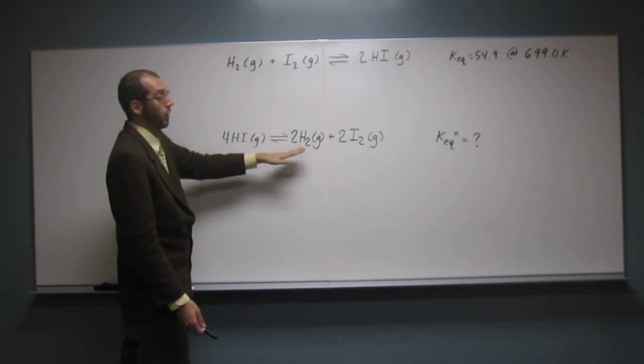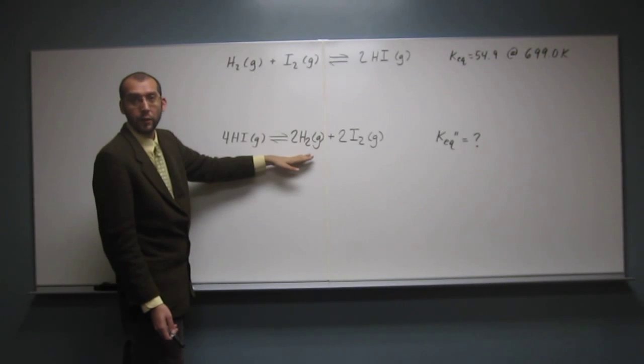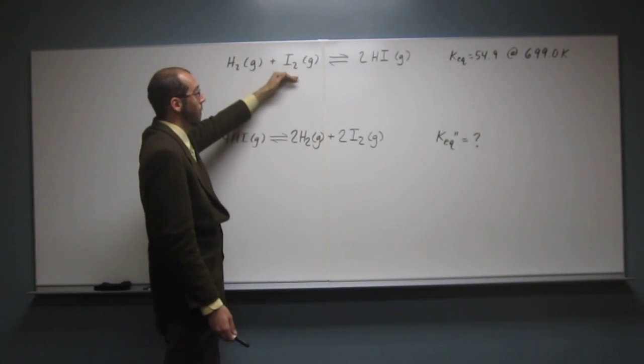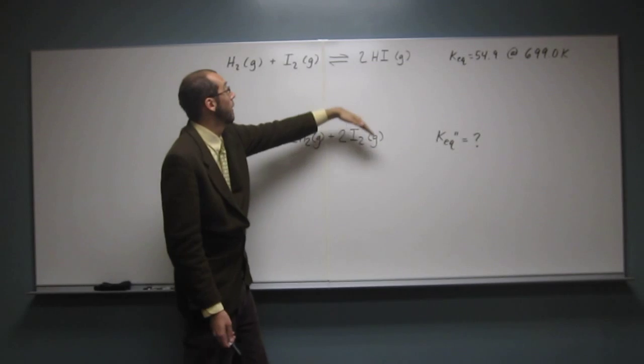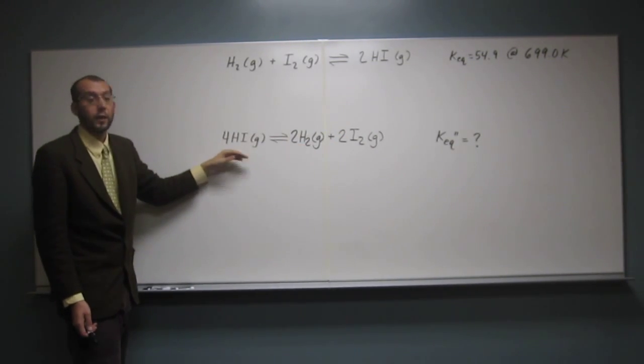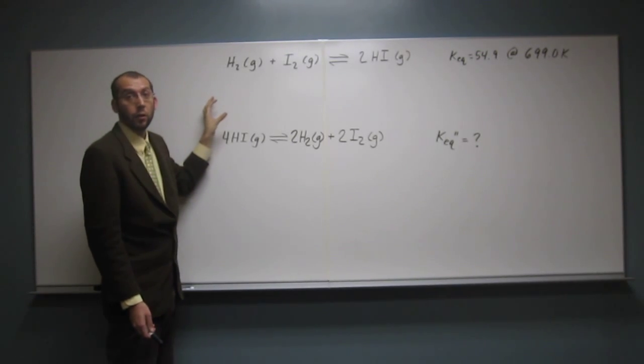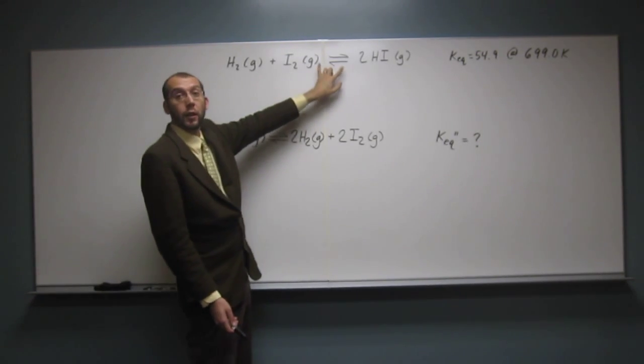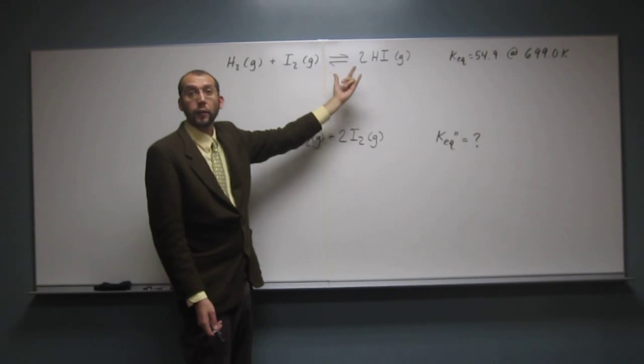See we have 1 hydrogen here, 2 hydrogens here. Does everybody see that? And then 1 iodine, 2 iodines, 2 hydrogen iodide, 4 hydrogen iodide. So this thing has been multiplied by 2 and then what has happened is we flipped it over like that.